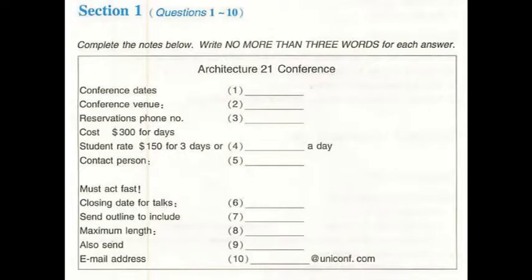Before you hear the rest of the talk, you have some time to look at questions 5 to 10. Now listen carefully, and answer questions 6 to 10. Professor Dawson speaking. Oh, hello. My name is John Helston. I'm an architecture student at London University. I'm here in Australia for three months, looking at energy-saving house designs.